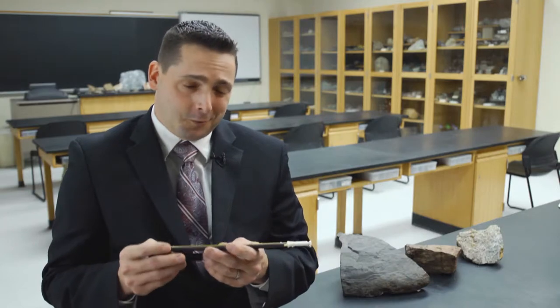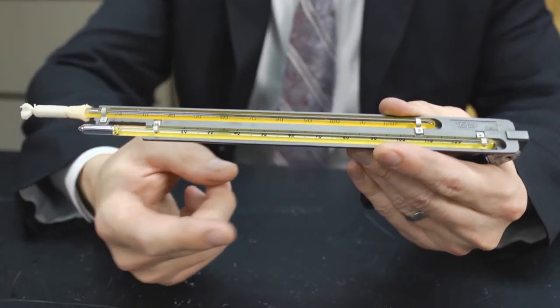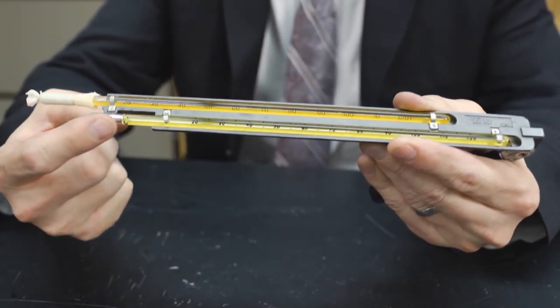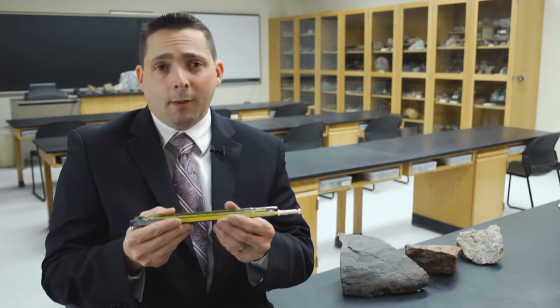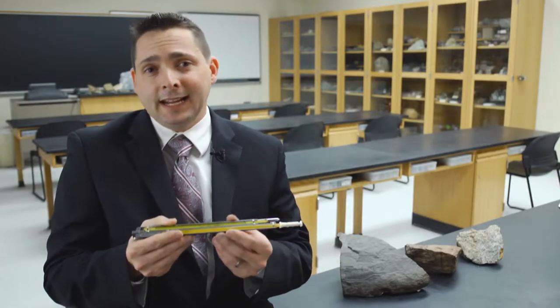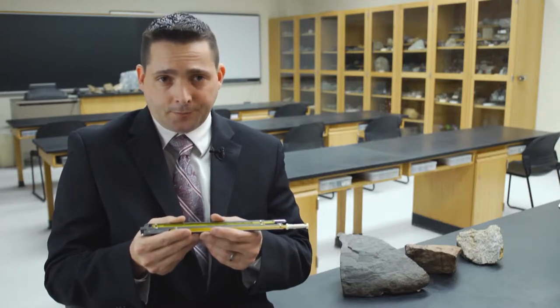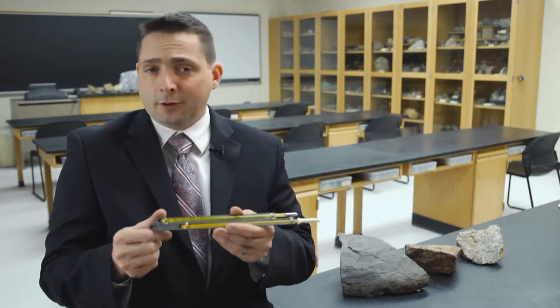Now, relative humidity is actually a ratio of the percent moisture in the air versus the saturation level, or the maximum amount of moisture that could be contained in the air at a given temperature. A sling psychrometer has a number of components.